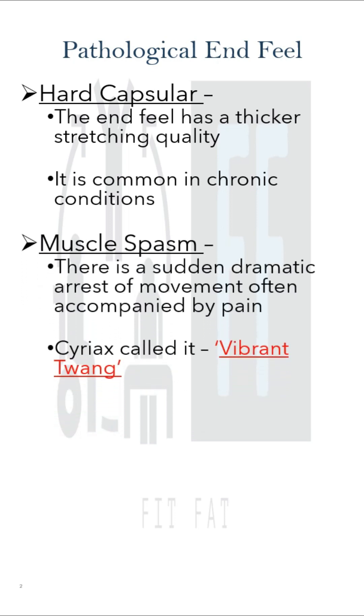The second option was muscle spasm. It is the sudden dramatic arrest of movement, often accompanied by pain. Cyriax called this end-feel a vibrant twang.